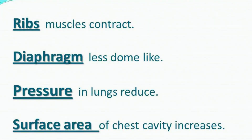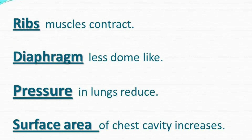पहले हम ये पढ़ते हैं कि Inhalation के अमल के दौरान कौन कौन से steps वकूपजीर होते हैं। Number 1: Ribs Muscle Contract। Number 2: Diaphragm Less Dome-like। Number 3: Pressure in Lungs Reduce। Number 4: Surface Area of Chest Increases।